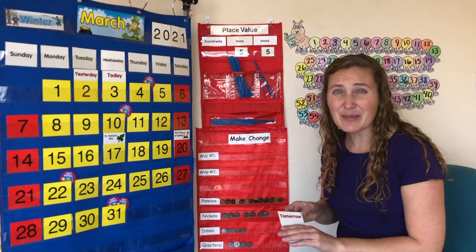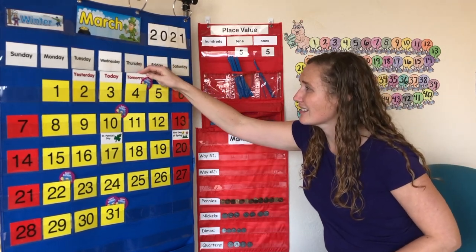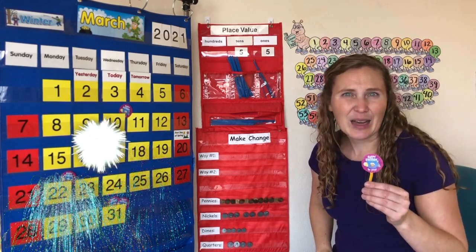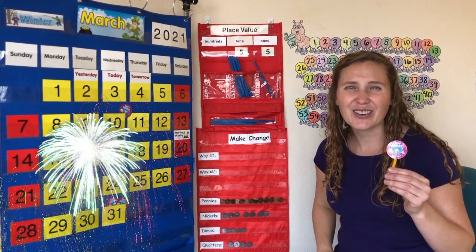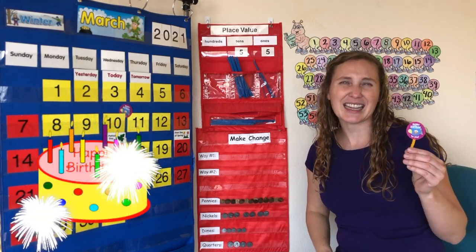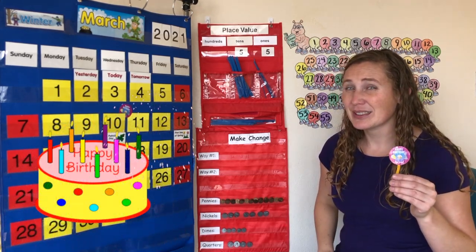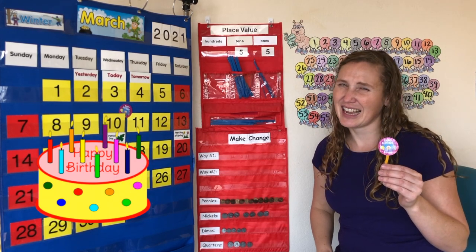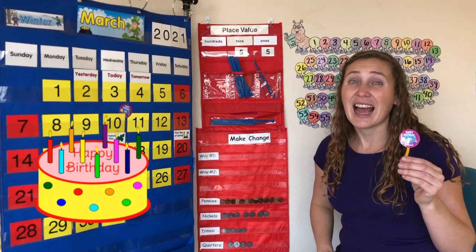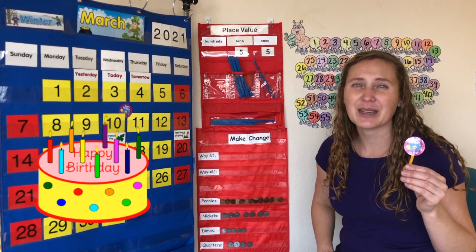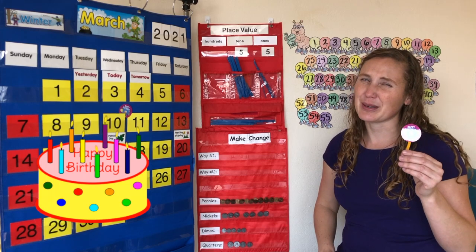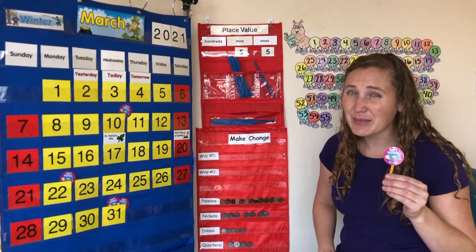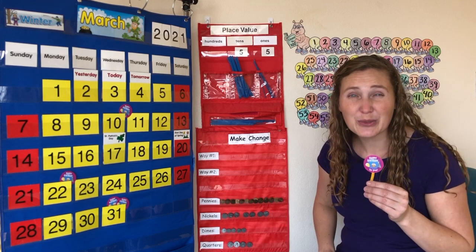Tomorrow is somebody's birthday. Tomorrow will be Emily's birthday. Emily lives in Colorado. Let's sing Happy Birthday to Emily. Happy Birthday! Happy Birthday! Happy Birthday to you! Happy Birthday dear Emily! Happy Birthday to you! Happy Birthday Emily! I hope you have a great birthday!